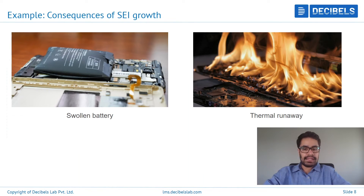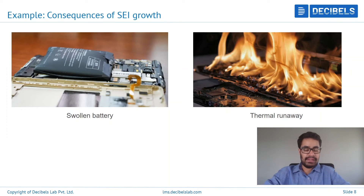Here you can see an example of what happens when SEI grows and forms into dendrites. It can cause the cell to swell uncontrollably, and then finally it can lead to thermal runaway or internal short circuit. This can cause a lot of hazardous situations if the cell is unrestricted in terms of dendrite growth, posing severe hazards to the user.